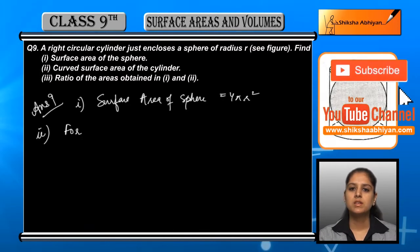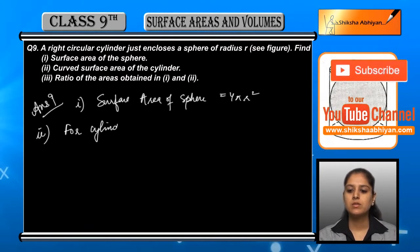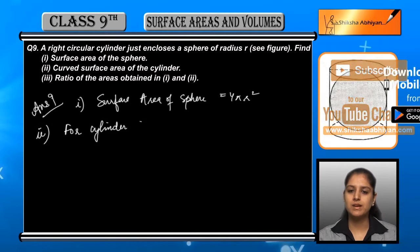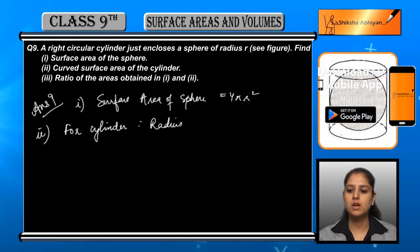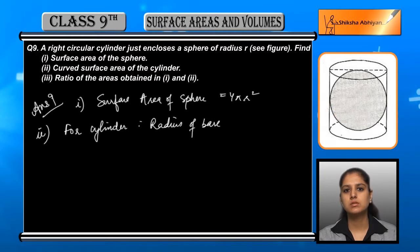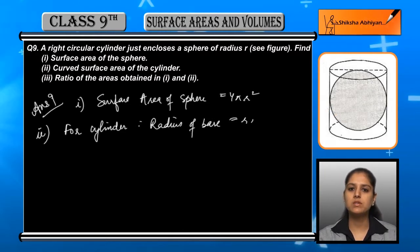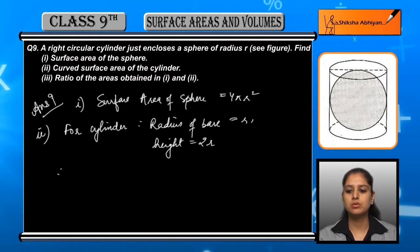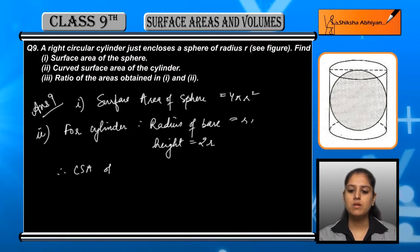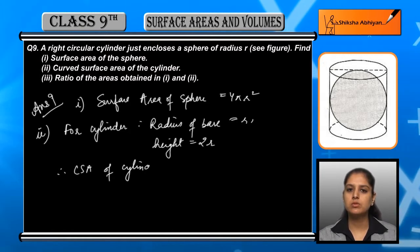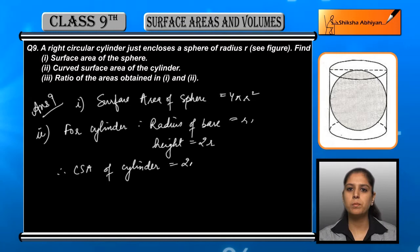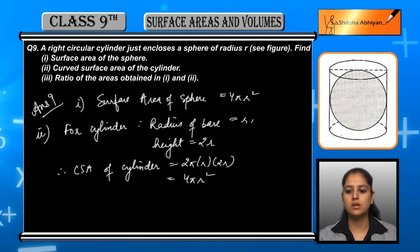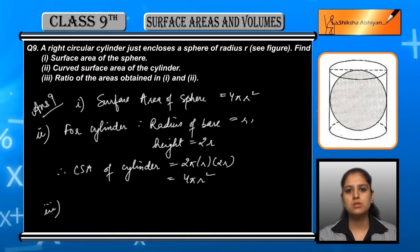The radius of the cylinder is equal to r, and the height of the cylinder is equal to twice the radius, which is equal to 2r. So the curved surface area of the cylinder is equal to 2πrh. Putting r and h values in, that is r and 2r, which gives 4πr².